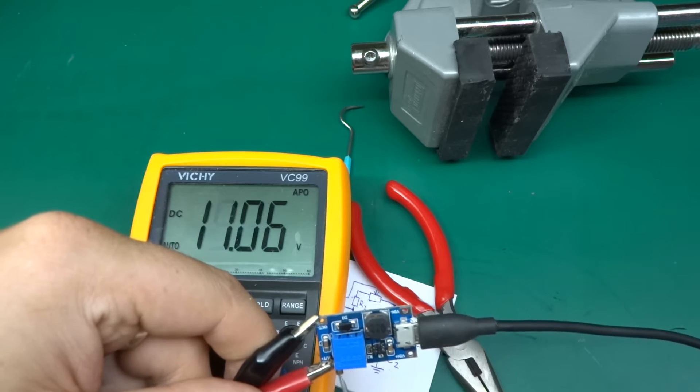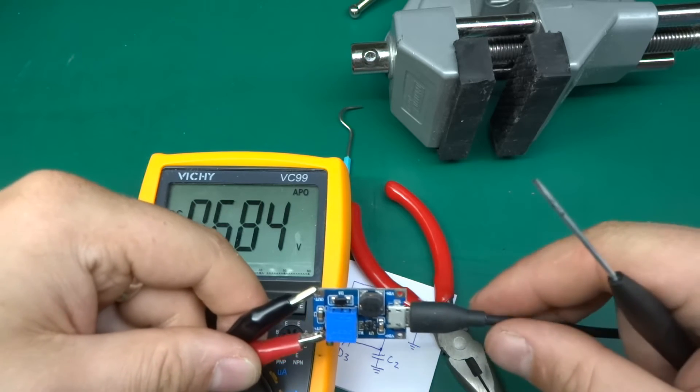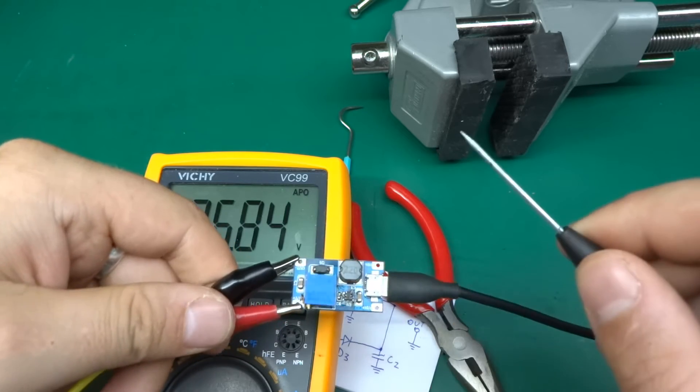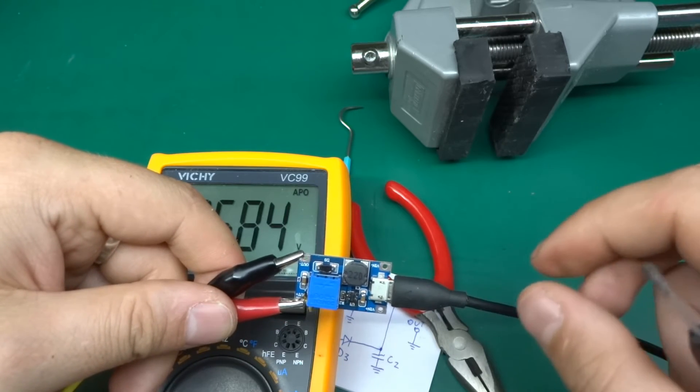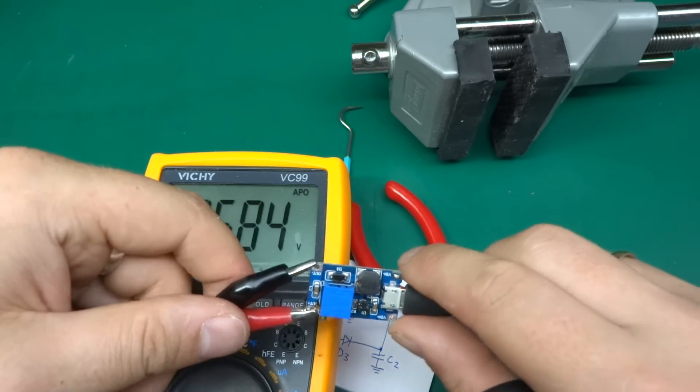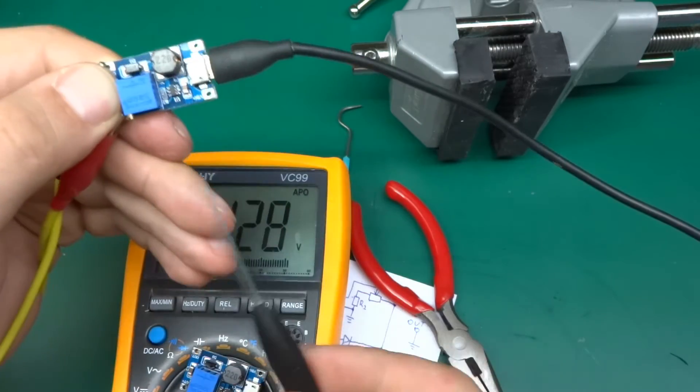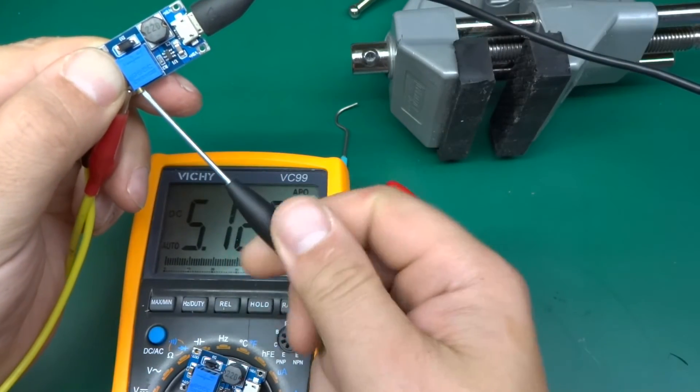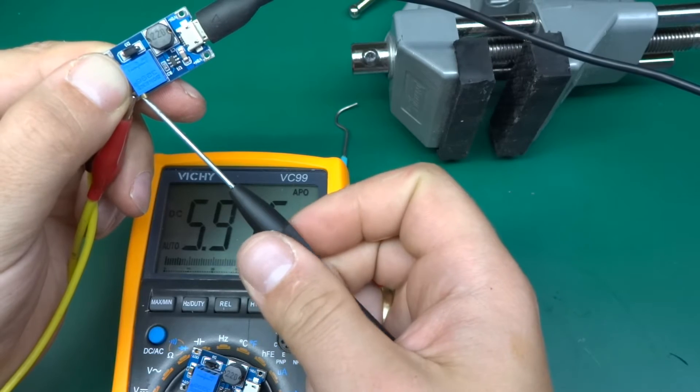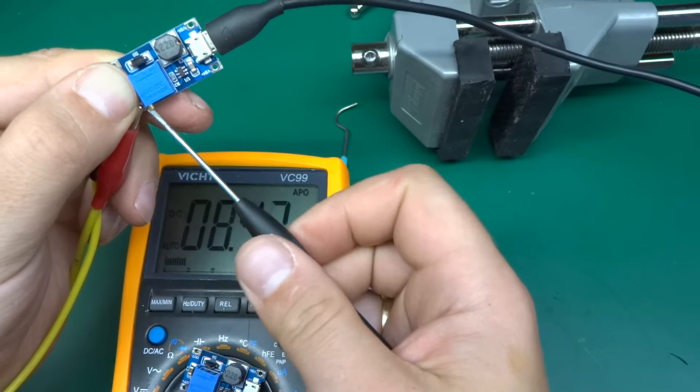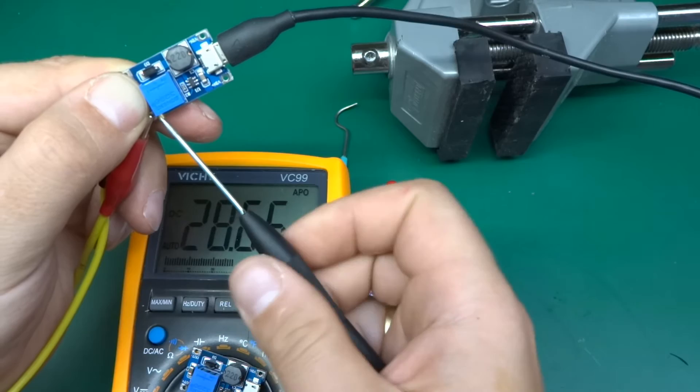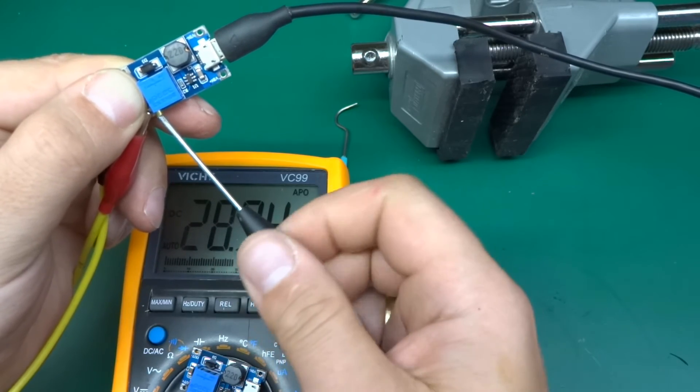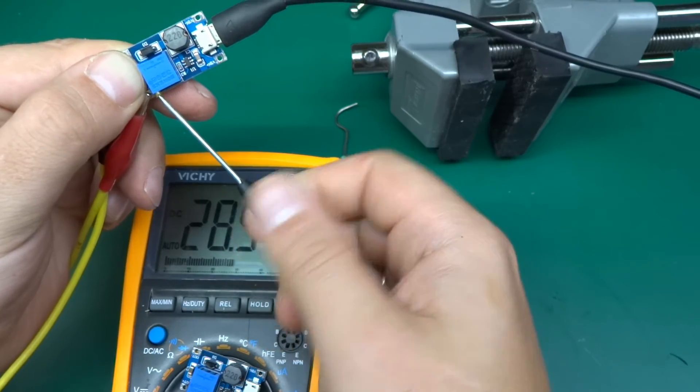Excellent! Have I just been silly and gone through all of this just to find out that I haven't turned the multi-turn pot far enough to see the change? Let's try the other module. Here is the other one, let's keep turning it clockwise. Oh yes, it actually works! Wow. What a relief. So it does actually work and it goes up to 28 volts.